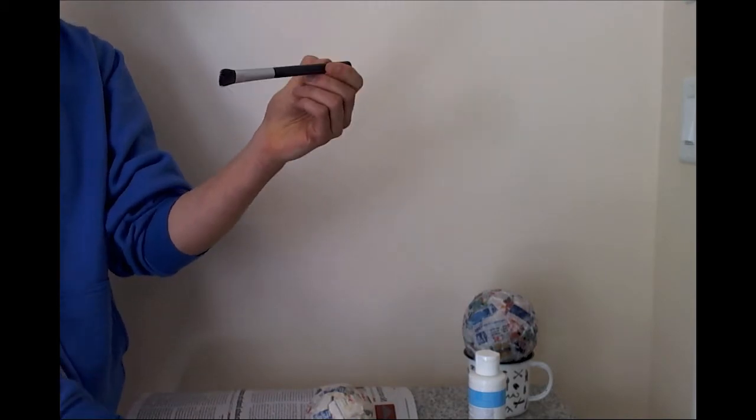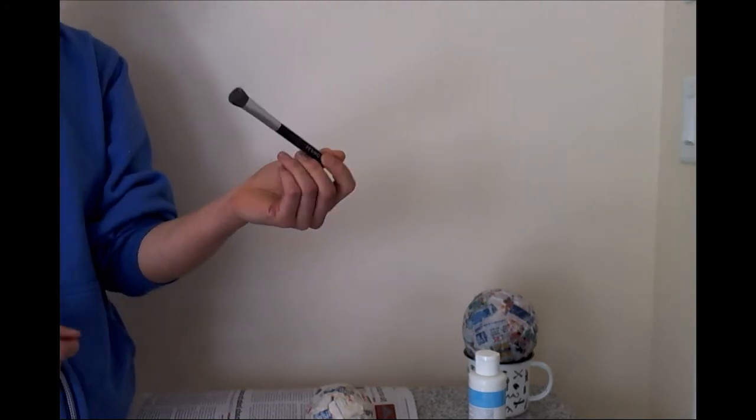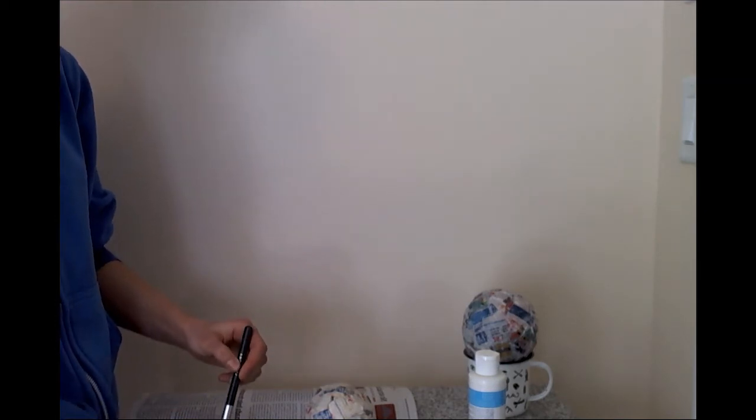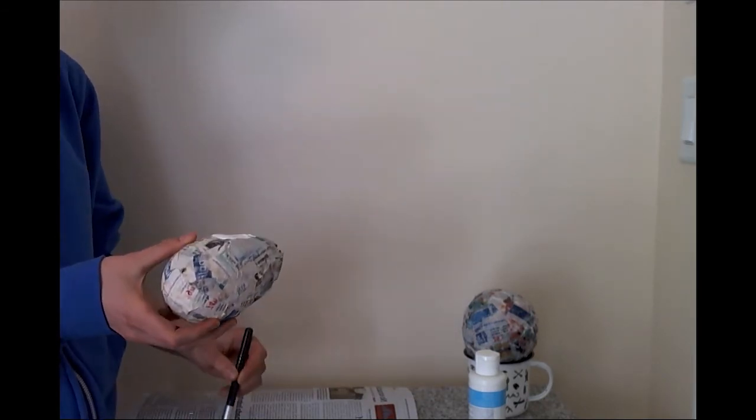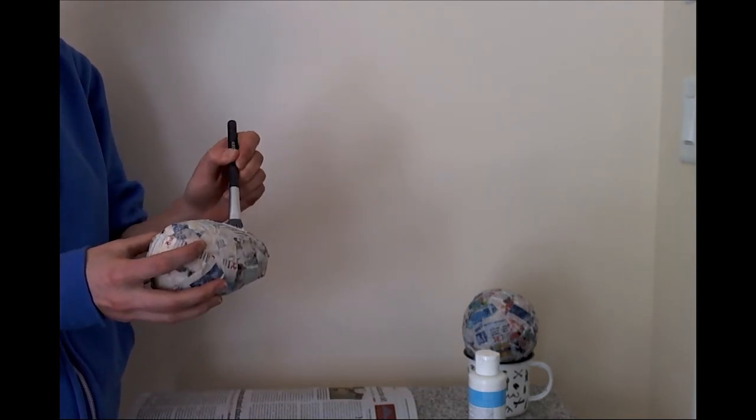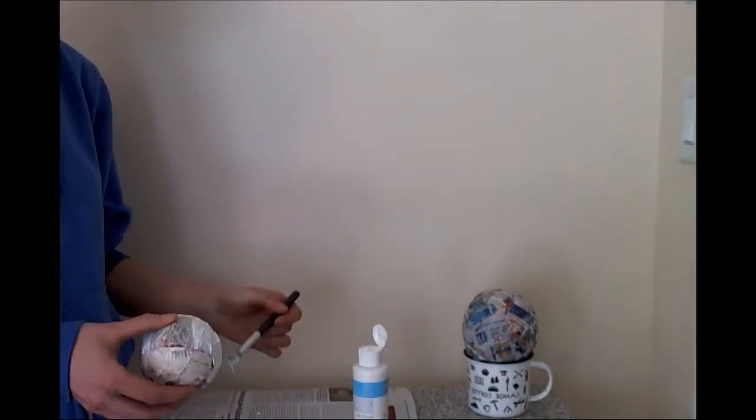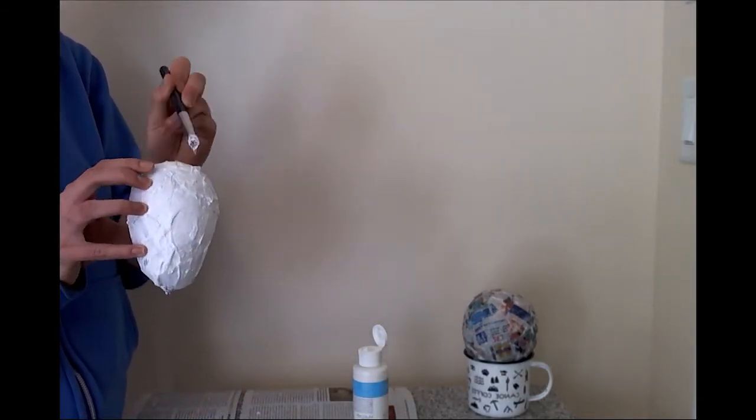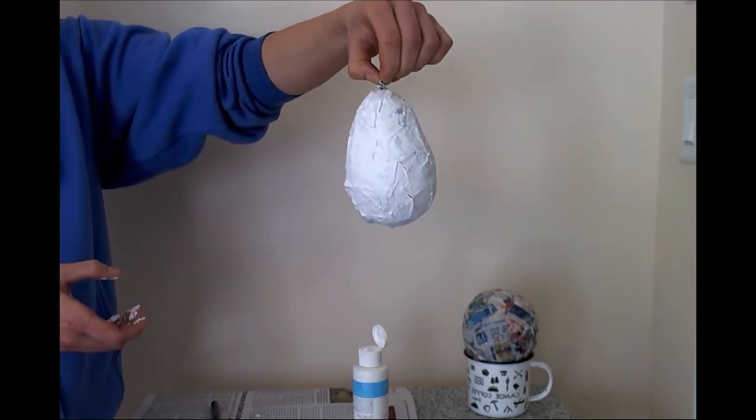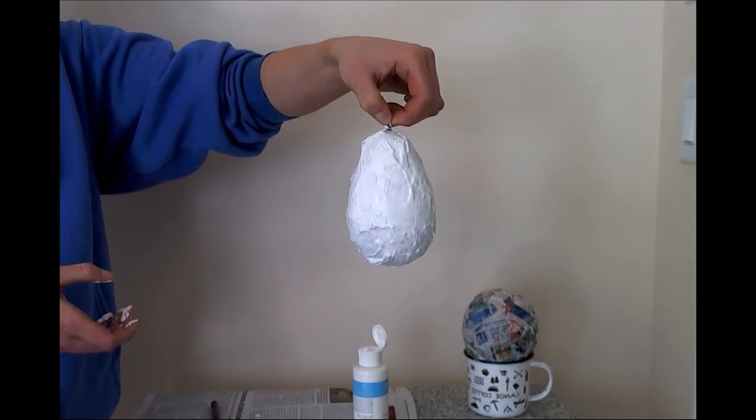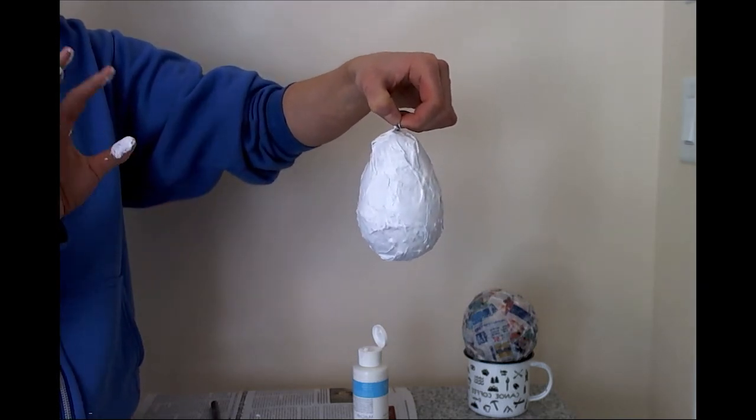Once your planet has been drying for your set amount of time, you're going to come out with something that's pretty hard and firm. If I squeeze this, it's not really going to bend at all. If I tap it on the table, it sounds pretty solid. We know we're ready to paint. What we want to do first is start with a base coat of white acrylic paint. This is going to really cover up all the newspaper look of the planet and give us something really good to work with to decorate further.